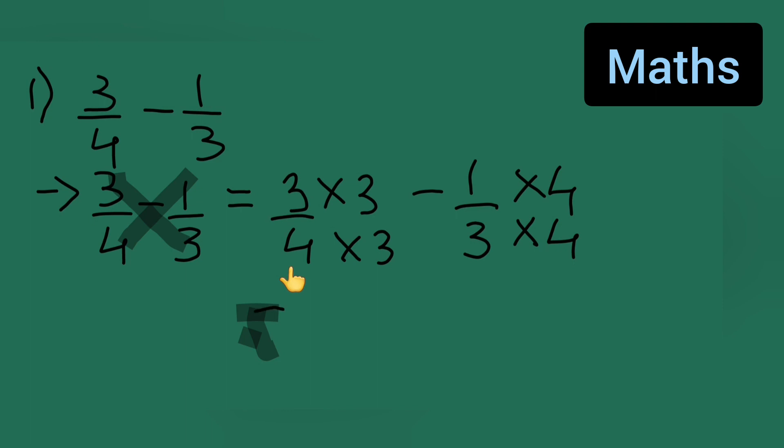This is equal to 3 threes are 9 upon 3 fours are 12 minus 4 upon 12. So this will be 9 minus 4 upon 12. 9 minus 4 will give you 5 upon 12. So answer is 5 upon 12.